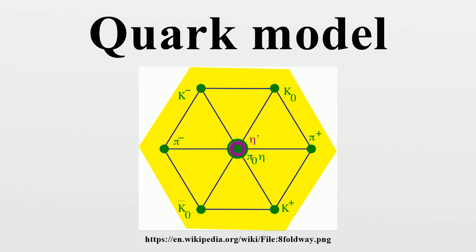Mesons are made of a valence quark-antiquark pair, while baryons are made of three quarks.